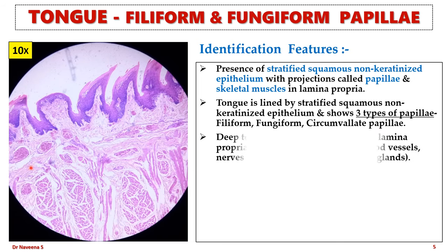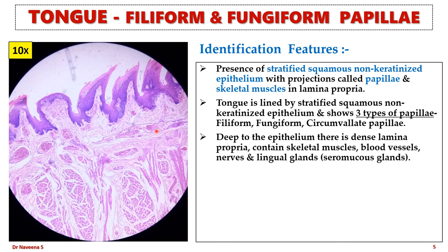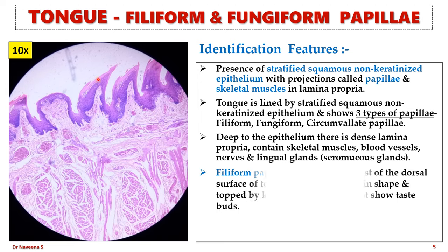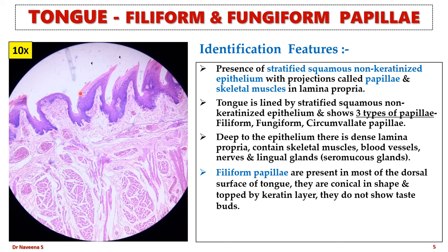Deep to the epithelium there lies dense lamina propria which contains skeletal muscles, blood vessels, nerves, and lingual glands or seromucous glands. Filiform papillae are conical in shape topped by a keratin layer. They do not show taste buds in their epithelium and are present on most of the dorsal surface of the tongue, making it rough.